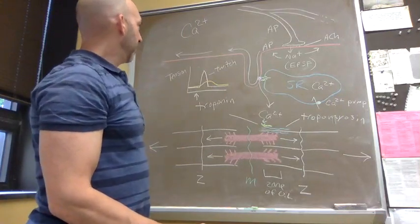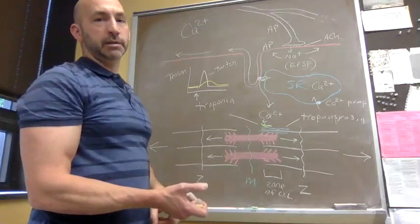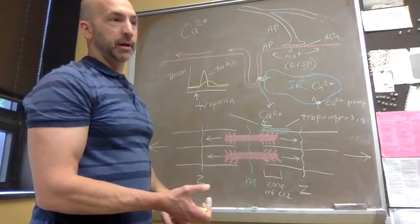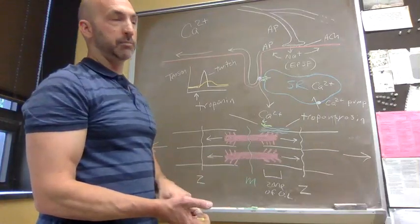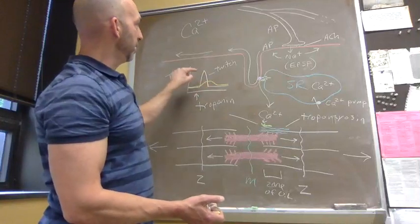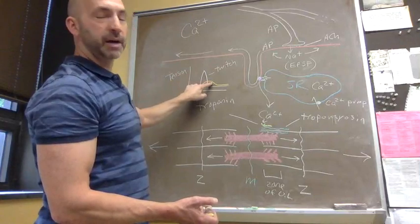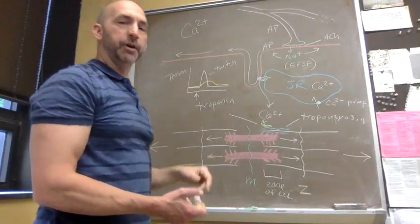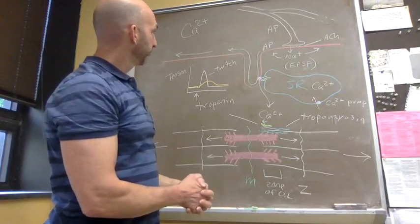We'll come back to how that relates to differences in power generation as well. Remember, power is the development of force per unit time, so this is developing more force in a shorter time. That's a more powerful fiber than the slow twitch fiber. We'll talk more about metabolism in an upcoming section. Great.